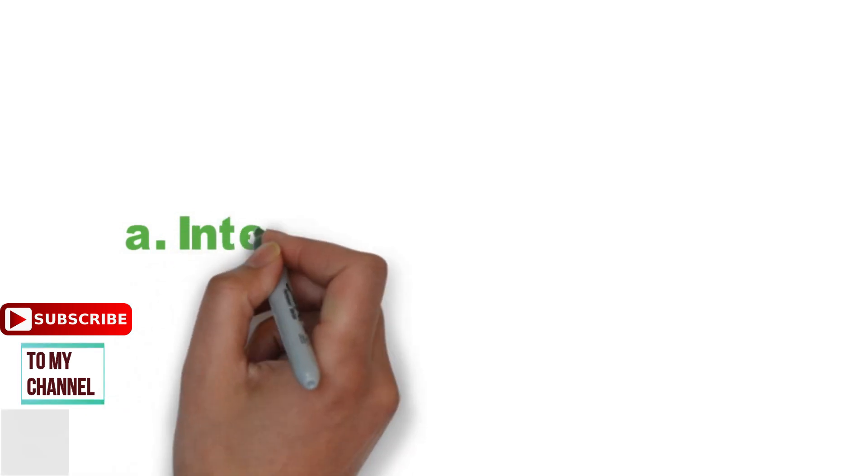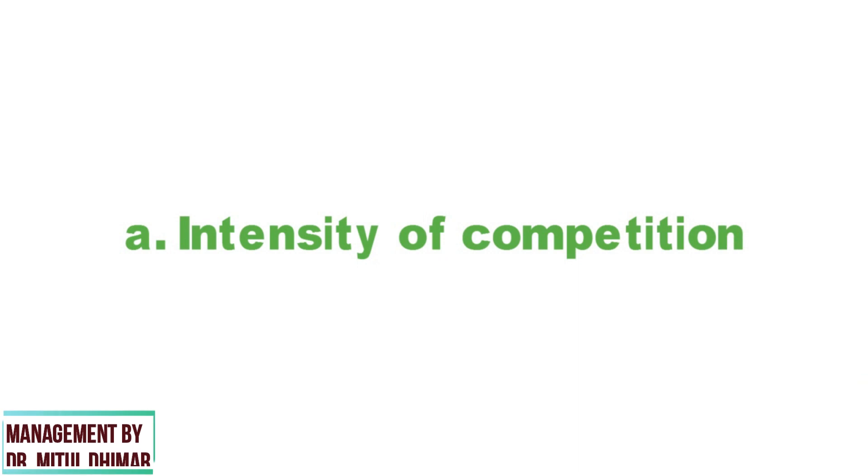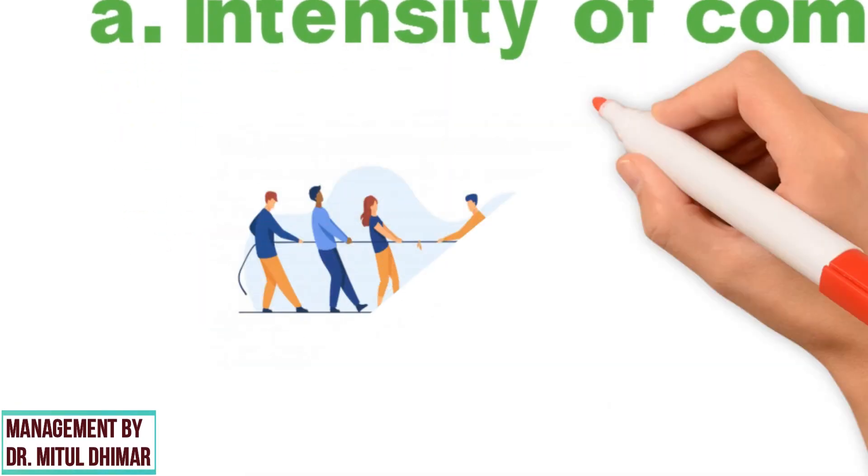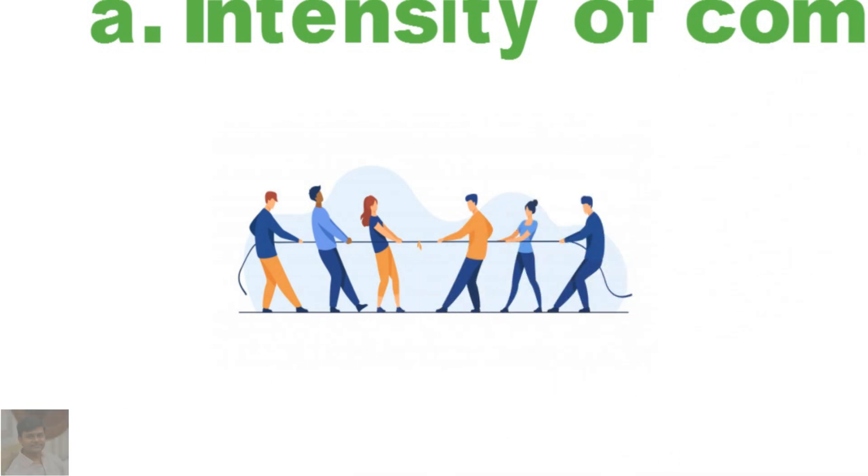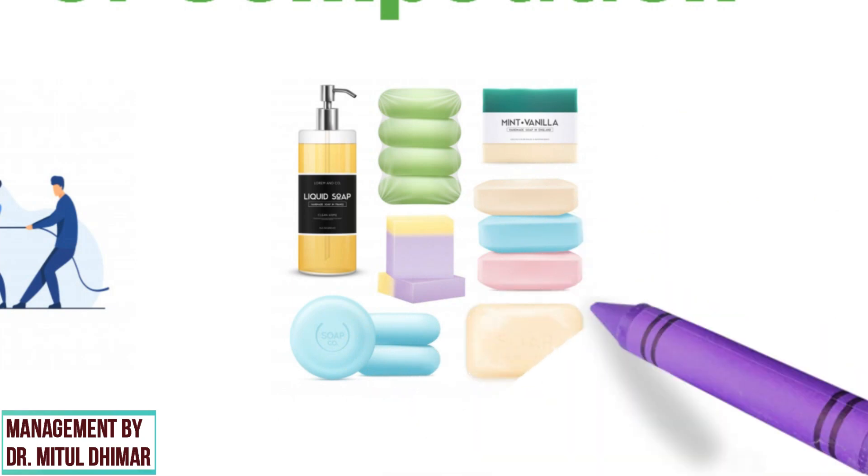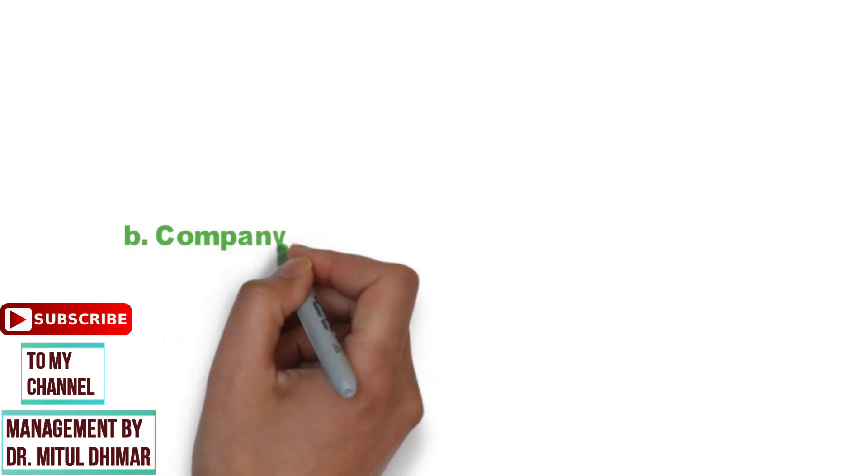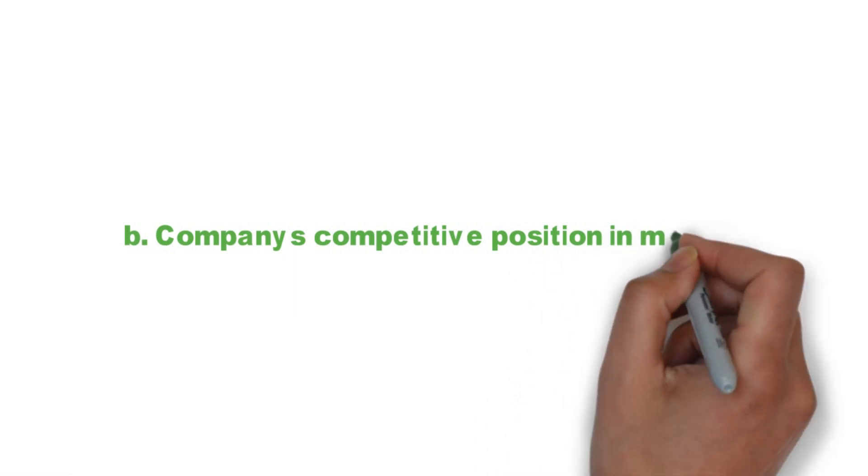First factor is intensity of competition. When there is strong competition in the market, the company must consider competitors' distribution strategies and practices while selecting marketing channels. For example, majority of soap manufacturing companies using multi-intermediary strategy.